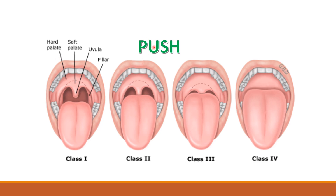In each grade, one letter is deleted from the mnemonic. In class 2, the facial pillar cannot be seen, but you can see the uvula, soft palate, and hard palate. In class 3, you can see the soft palate as well as the hard palate. In class 4, you can only see the hard palate. That is how the Mallampati score is classified.